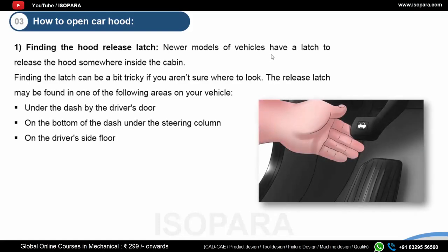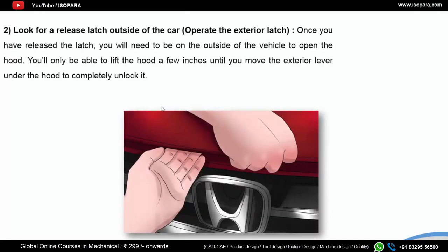Now we will see how to open a car hood. The first thing you have to do is find the hood release latch, which is inside the cabin. You will find the hood release latch inside under the dash by the driver's door, or on the bottom of the dash under the steering column, or on the driver's side floor. At these three areas you might find the hood release latch.